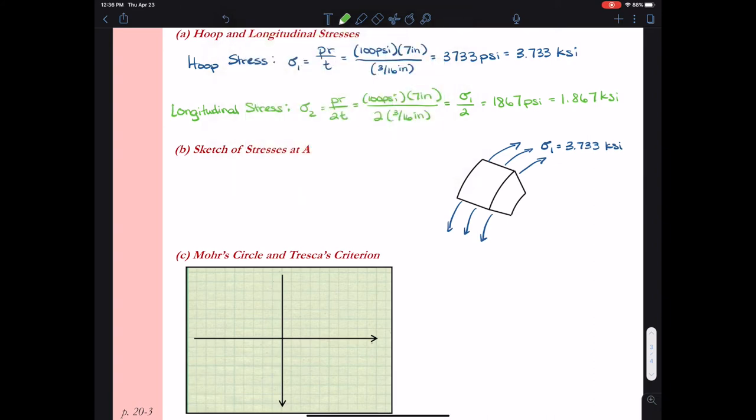So I go ahead and I draw my little sketch. I'm going to put in the hoop stress in the circumferential direction, sigma 1 equals 3.733 ksi, and then sigma 2 is 1.867 ksi.